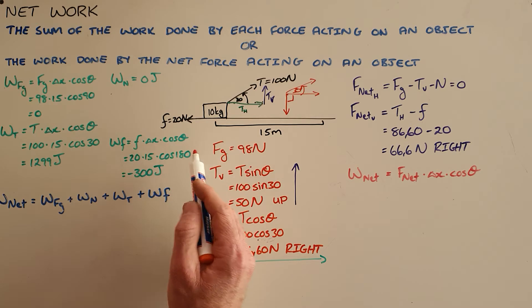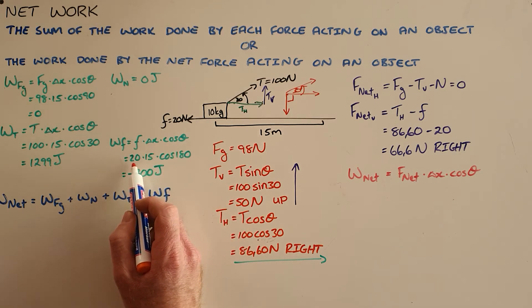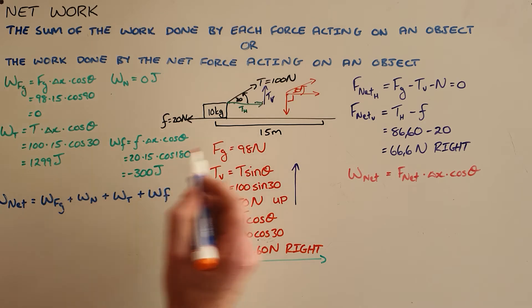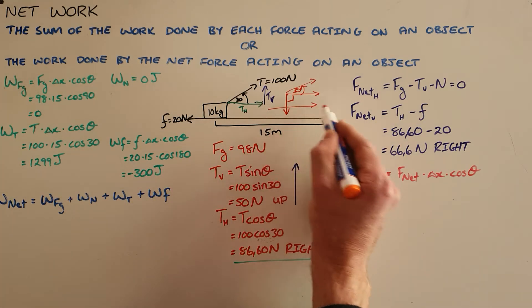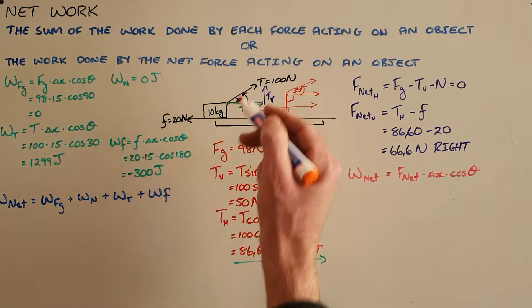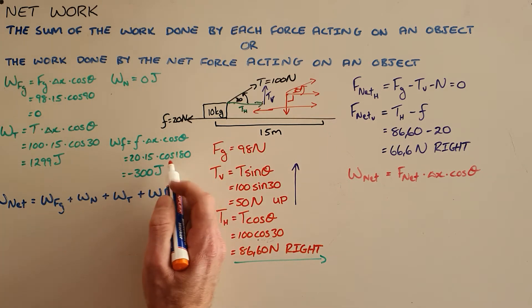The frictional force we can now see is a force of 20 newtons multiplied by the displacement. The difference here is that the displacement is to the right and the friction acts 180 degrees to that, so cosine of 180.